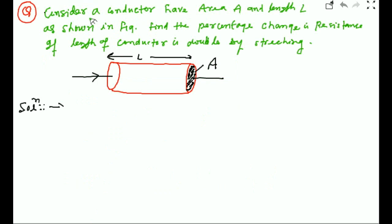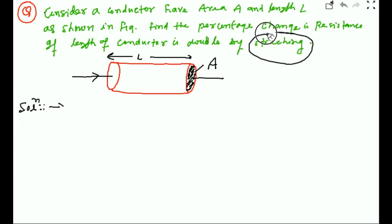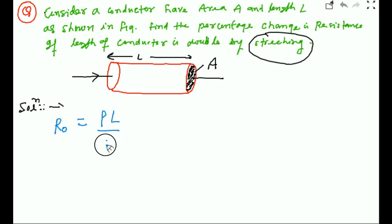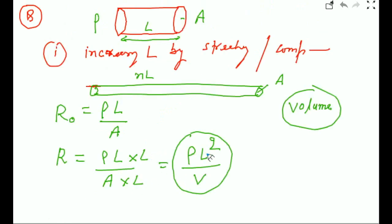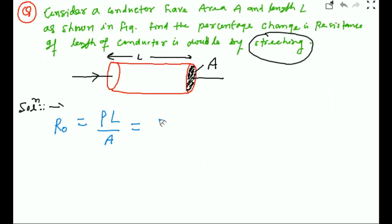Now let's take a question. Consider a conductor with area A and length l as shown in the figure. Find the percentage change in resistance if the length of the conductor is doubled by stretching — that is a very important point. Whether the question says stretching, compression, or simply adding another conductor matters. For this question, write R-naught equals rho l by A. Since it involves stretching, apply the formula R equals rho l-squared by V.